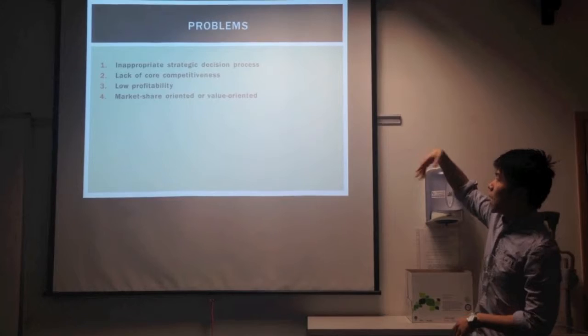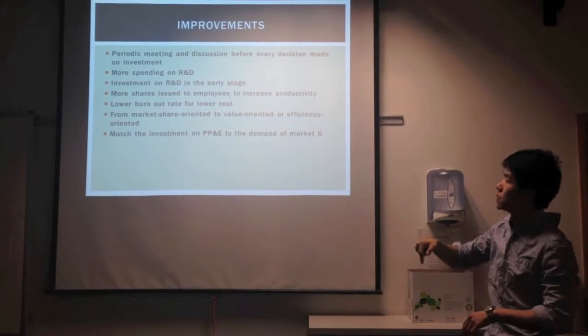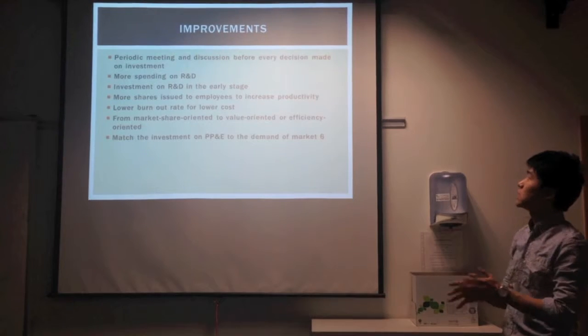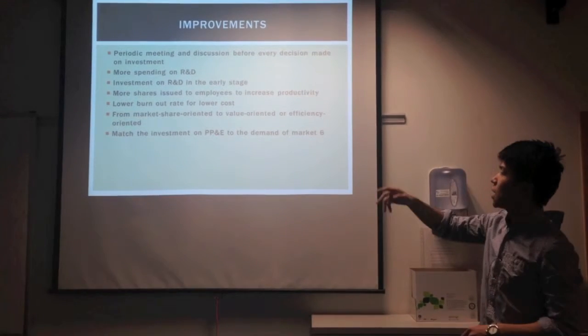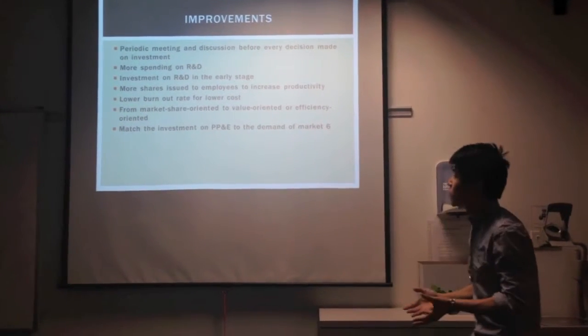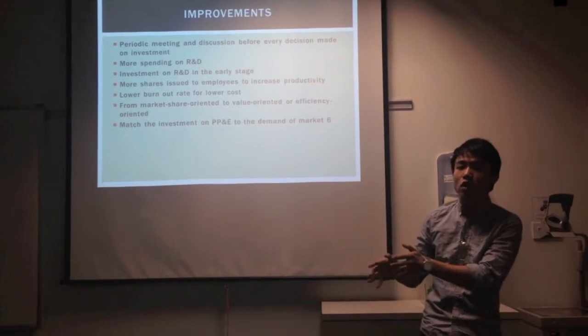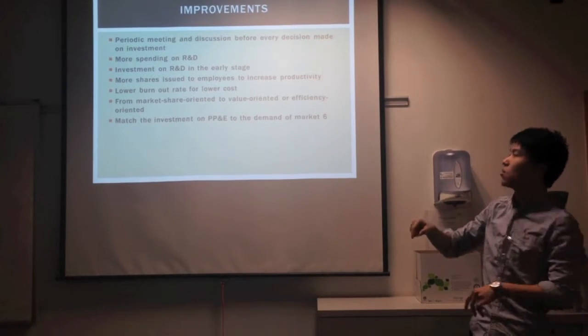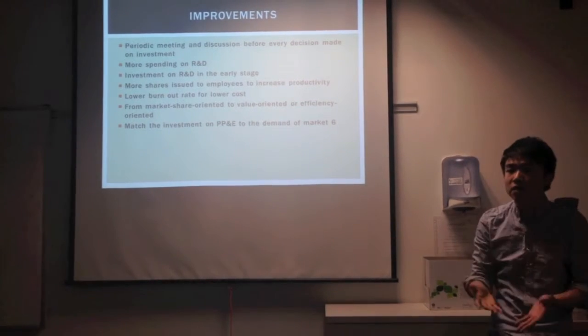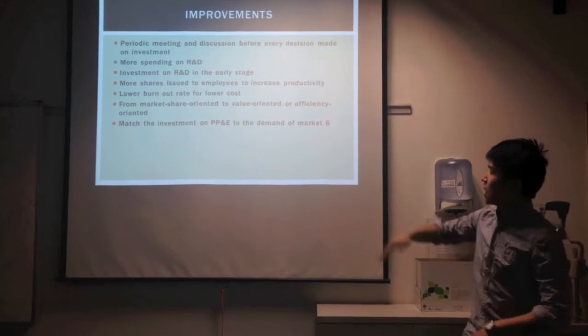Now I'll discuss the improvements we found to solve these problems. First is having priority meetings before any investment decisions are made. Second is more effective spending on R&D, investing in the early stages rather than later stages, like in the eighth quarter where we lost money. Third and fourth are issuing more shares to employees to increase their productivity and negotiating longer payment terms for lower costs.